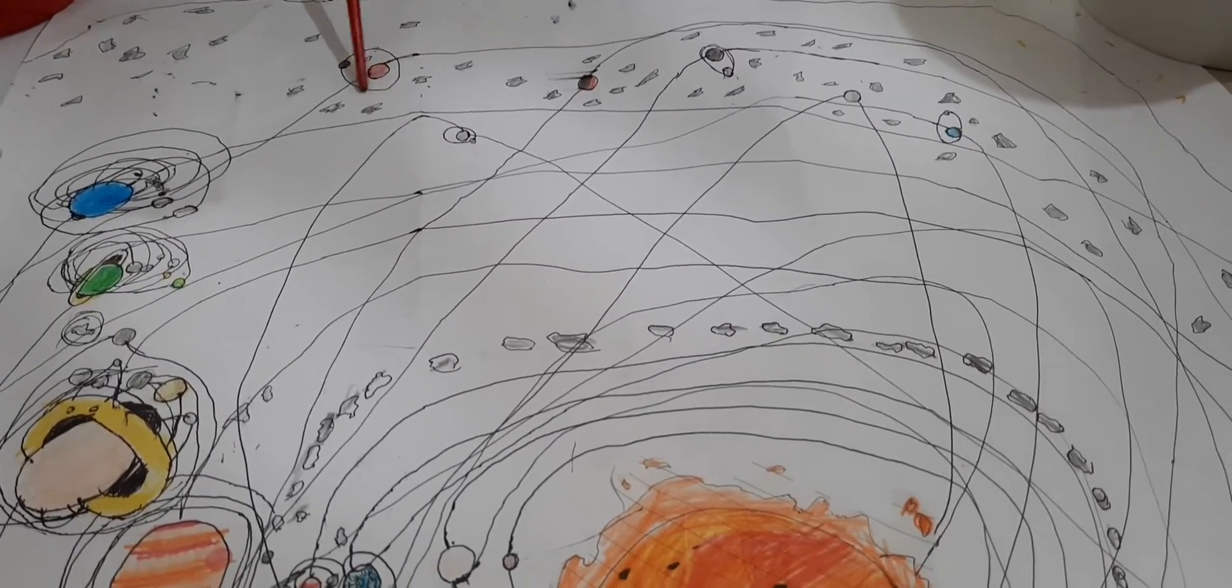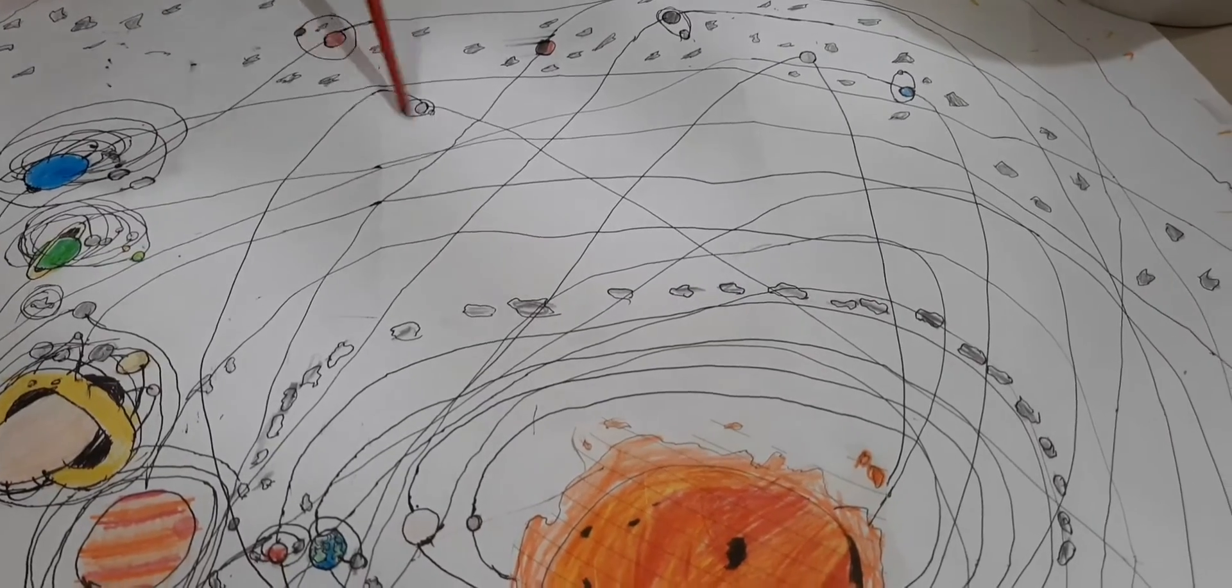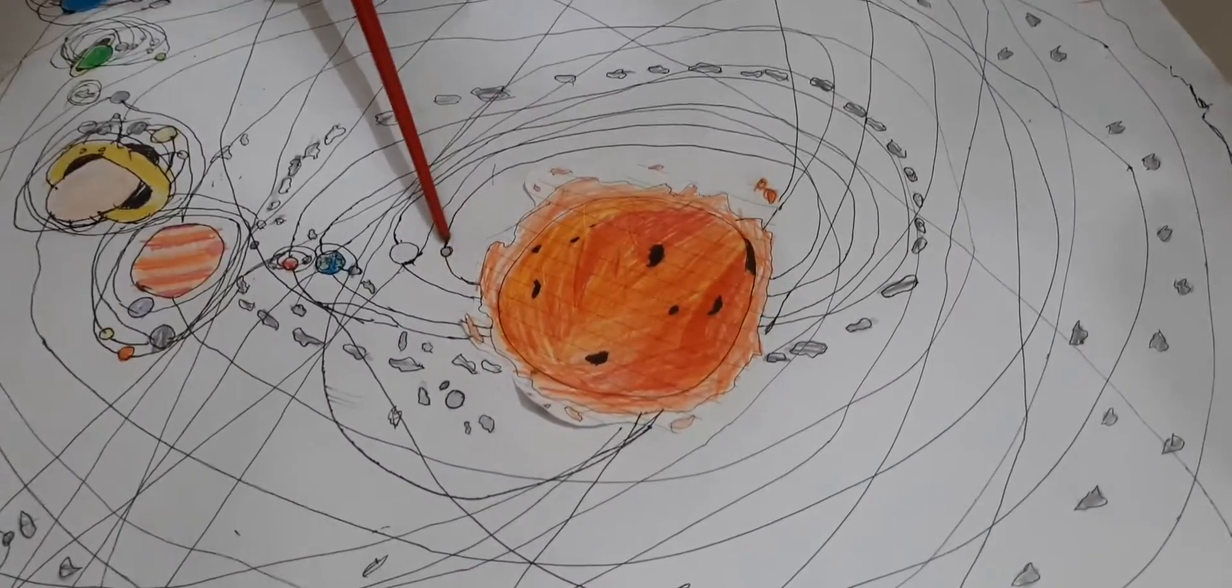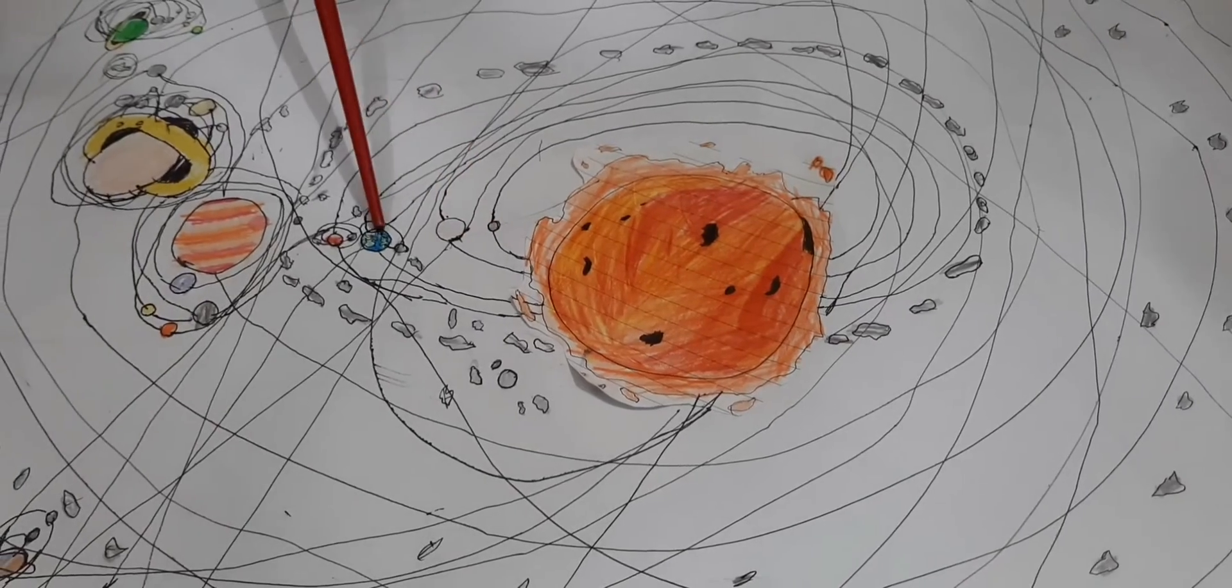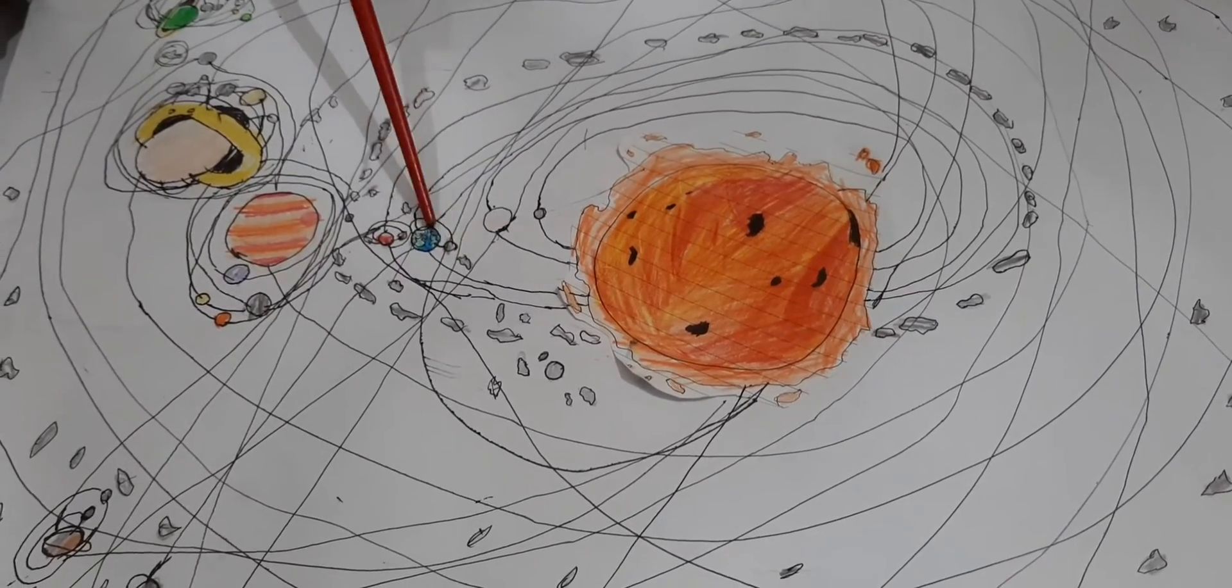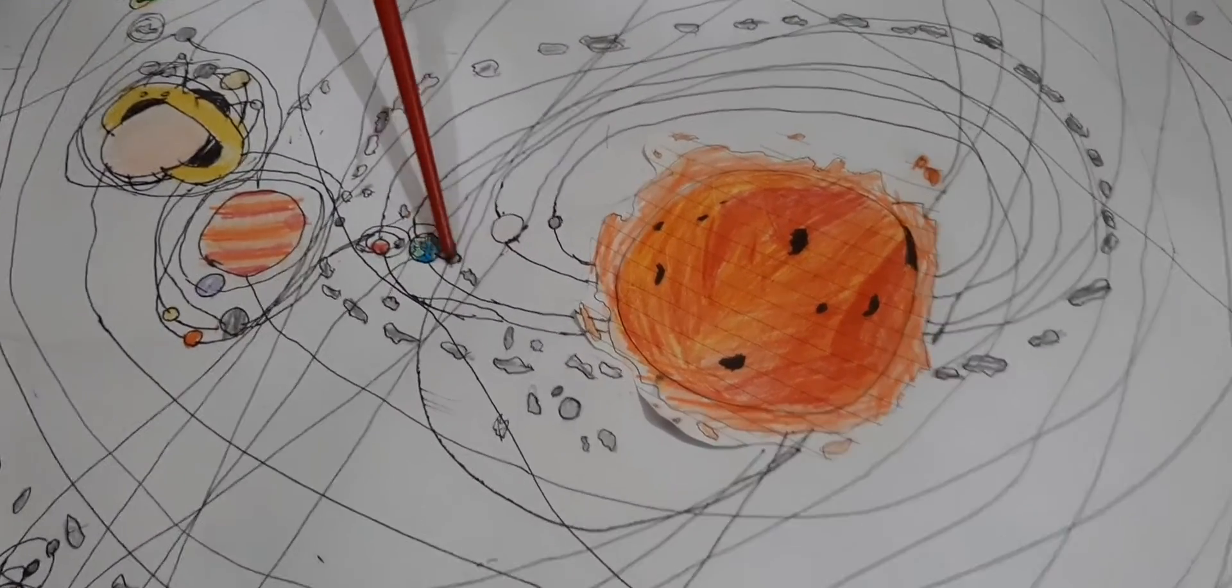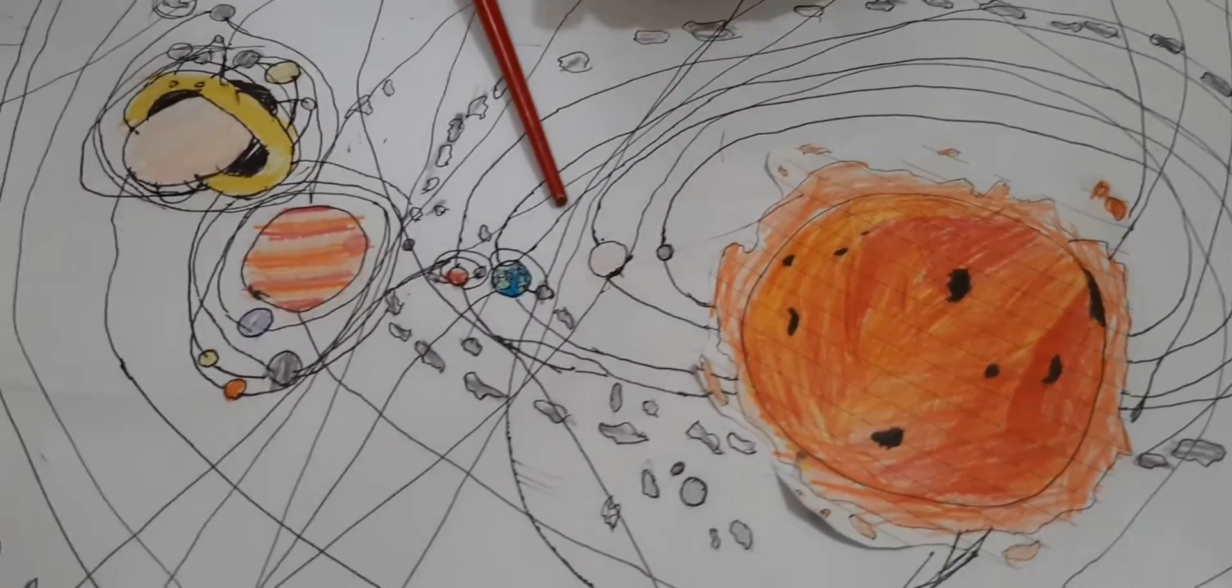Now we'll learn the moons of the planets and the dwarf planets. Mercury has no moons. Venus has no moons. This is Earth. It has one moon called Luna. It's our moon.